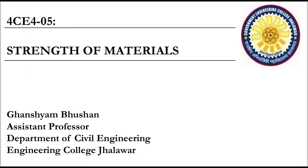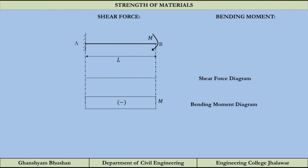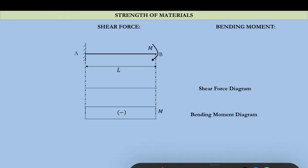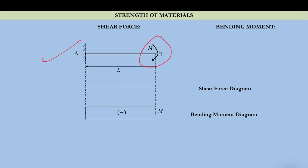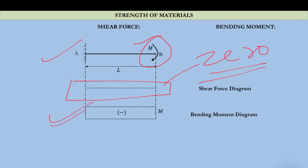Hello students, welcome to this online course of strength of materials. In the previous lecture we solved some problems. Today we are going to solve a few problems related to applied moment. Before moving further, the last question involved a cantilever beam subjected to only applied moment m. The shear force in the whole beam is zero, so the bending moment diagram was constant throughout — it was m.